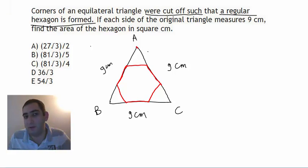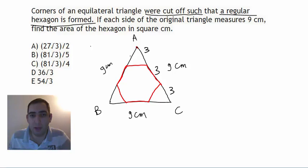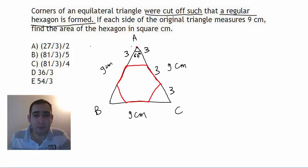Let's cut side AC into three equal parts: 3, 3, and 3. This angle here is 60 degrees because ABC is an equilateral triangle. So this small triangle here is also equilateral.